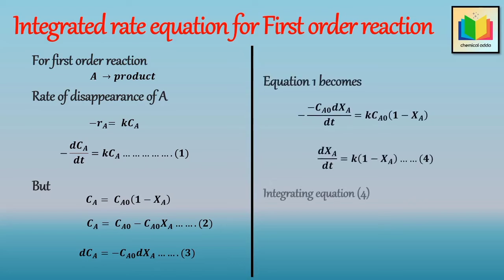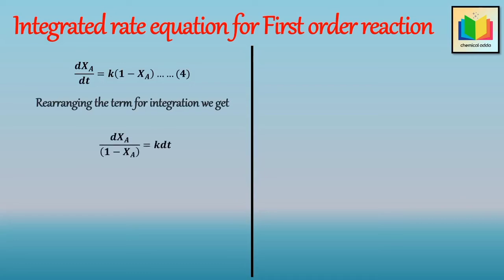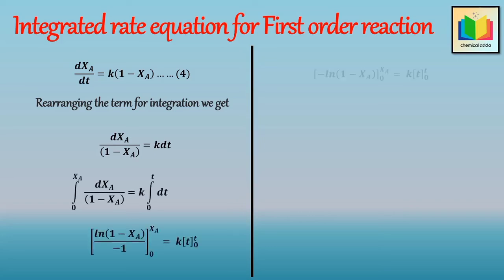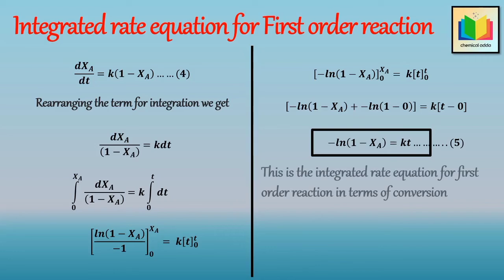Now let's integrate equation 4 within the limits: when T equals 0, X_A equals 0, and when T equals T, X_A equals X_A. Rearranging the terms of equation 4, we get dX_A/(1 minus X_A) equals K·dT. After integration and applying the limits, we get: minus ln(1 minus X_A) equals K·T. This is the integrated rate equation for the first order reaction in terms of conversion.